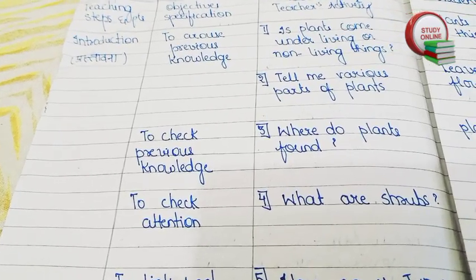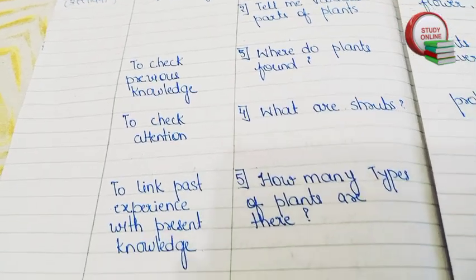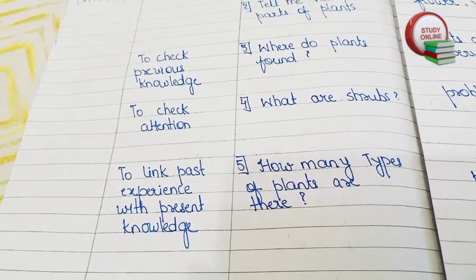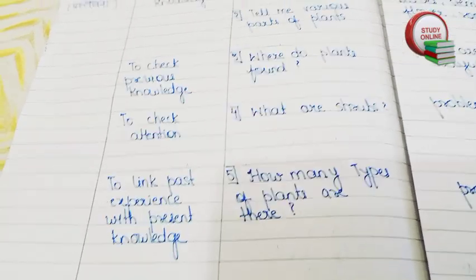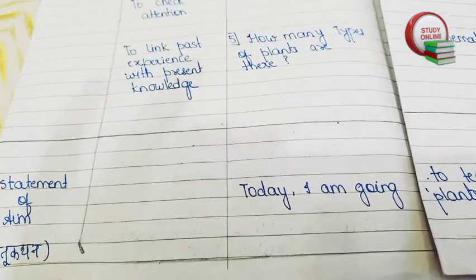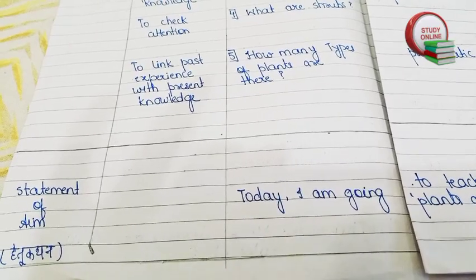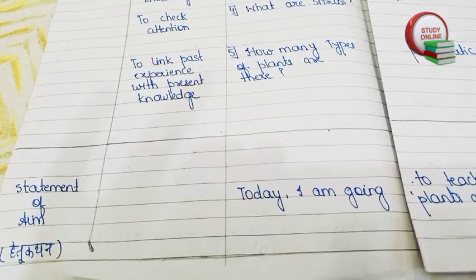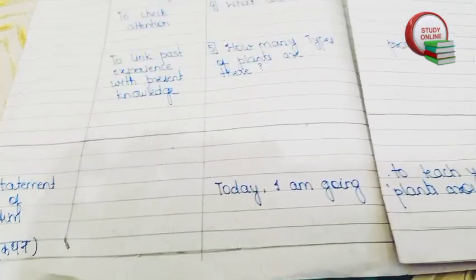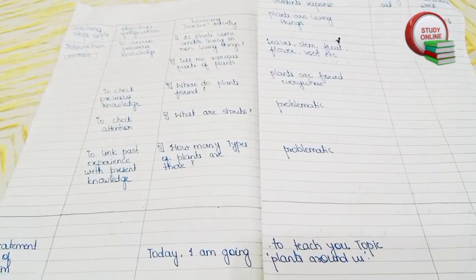We have to give a statement of aim. Here you can see the objectives and specifications: to arouse previous knowledge, to check previous knowledge, to check attention, to link past experience with present knowledge. After that, here you can see the statement of aim — we have to say 'Today I am going to teach you the topic Plants Around Us.' Like this we have to make our lesson plan.